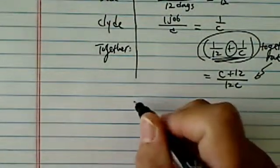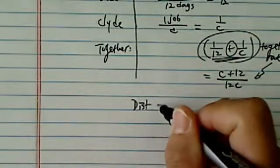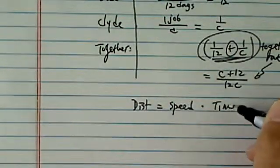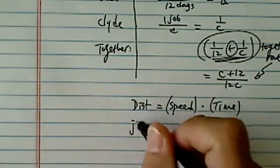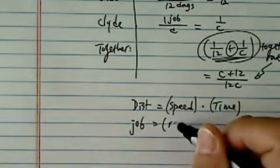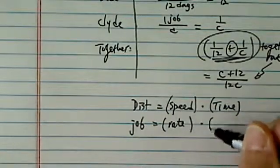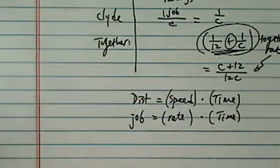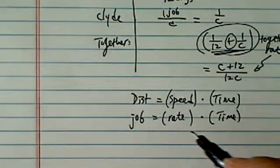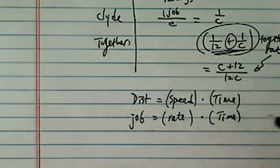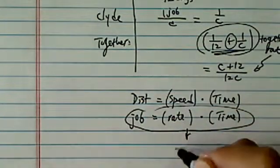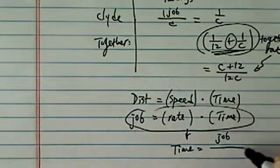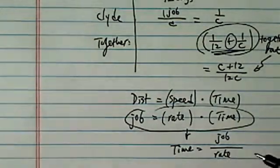Next, remember that distance is equal to speed times time. It's the same thing here: one job is equal to the rate of the job times the time it takes to complete. This is exactly the same relationship. So if that's true, then time is equal to the job — or distance — divided by rate.